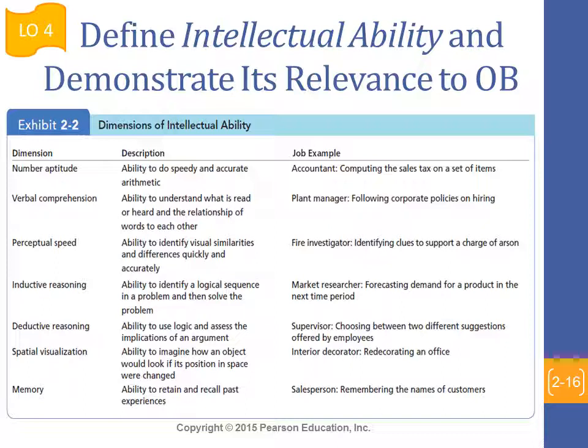This exhibit talks about the different dimensions of intellectual ability. It covers number aptitude, verbal comprehension, inductive reasoning, memory, and spatial visualization. Related to these different dimensions, there are different specific jobs. Hiring managers and human resources look for certain abilities — for example, if they are looking for an accountant, they will definitely look for people with number aptitude who are better at crunching numbers. This is very important when ensuring diversity within a workforce and ensuring that people with the right abilities are hired for the jobs at hand.